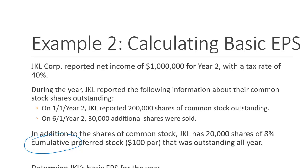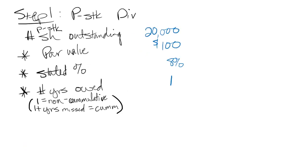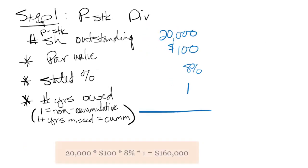So we do go back and take a second and look, but I don't see that they've missed a year. Let's go ahead and multiply that out. 20,000 times 100 times 8% times 1. Our preferred stock dividend is $160,000. That's what I'm supposed to pay them each year.